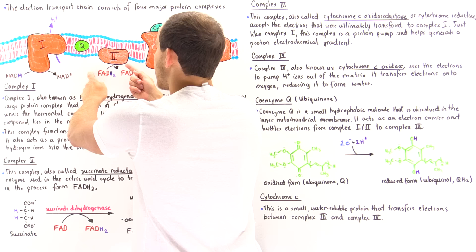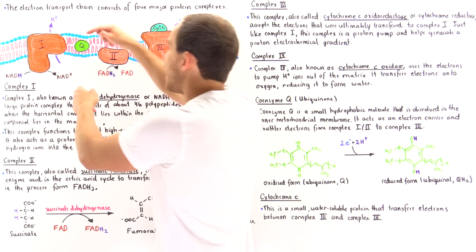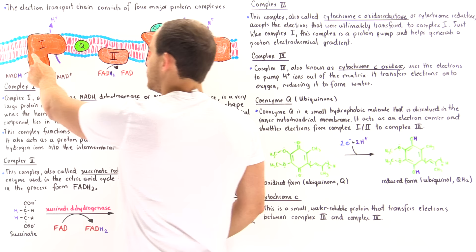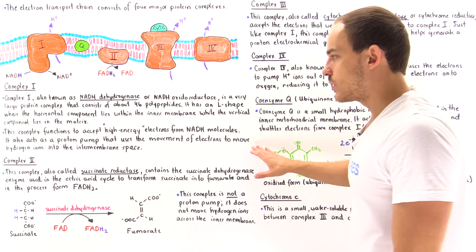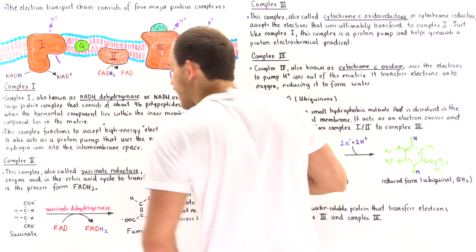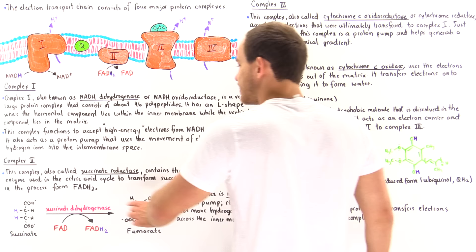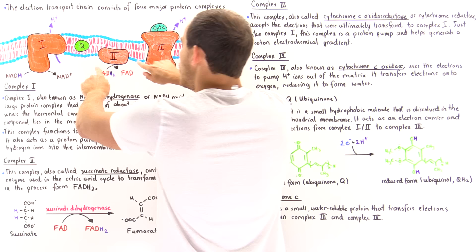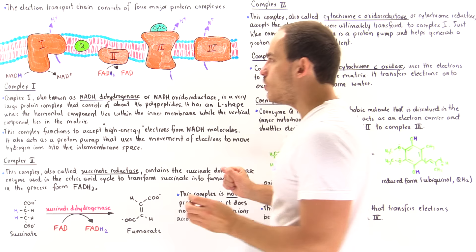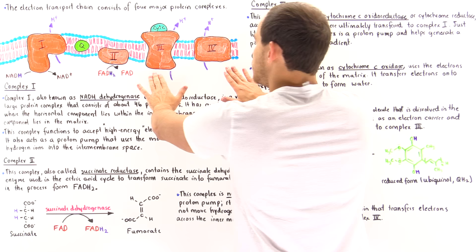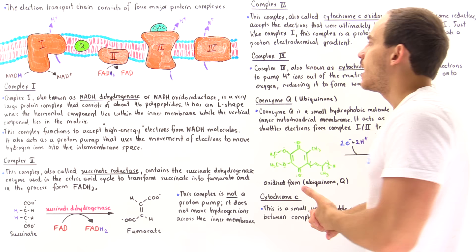Those electrons are then taken by coenzyme Q — ubiquinone — which can shuttle electrons not only from protein complex 1 to 3, but also from protein complex 2 to 3. Protein complex 2, also known as succinate reductase, contains the succinate dehydrogenase enzyme used by the citric acid cycle to transform succinate into fumarate, forming FADH2. One important distinction: protein complex 2 is not a proton pump — it does not move protons from the matrix side to the intermembrane side. Only protein complexes 1, 3, and 4 are proton pumps used to generate electrochemical gradients for protons.